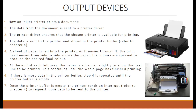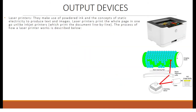The second type of printer is a laser printer. They make use of powdered ink and the concepts of static electricity to produce text and images. Laser printers print the whole page in one go, unlike inkjet printers which print the document line by line.